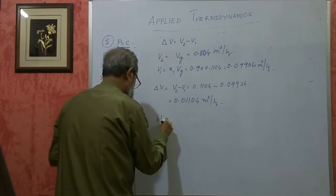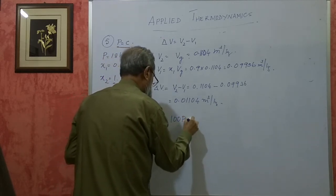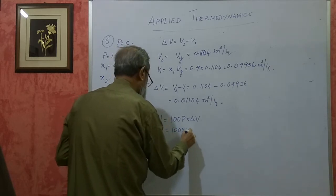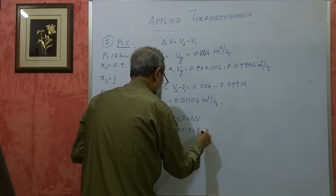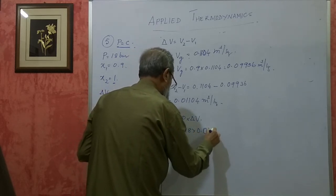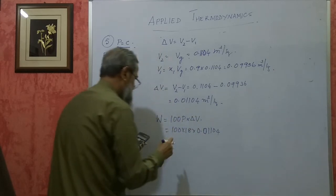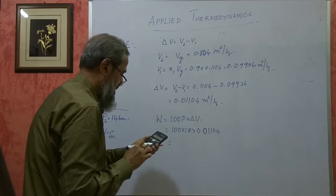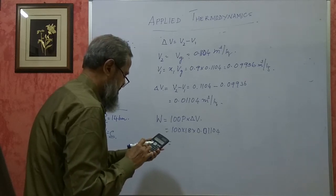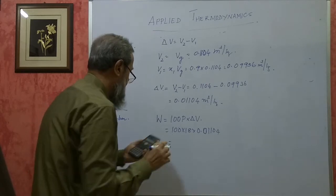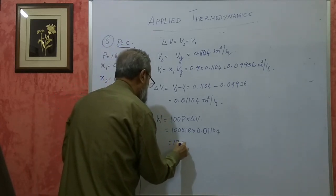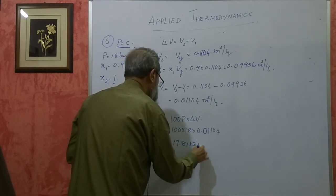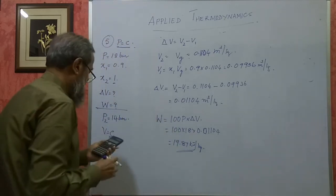Work done is equal to 100 · P · delta V. So 100 × 18 × 0.01104, which works out to 19.87 kilojoules per kg. That is the work done during that process.